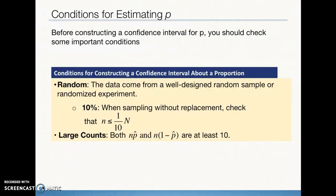Our three conditions are: Random — data must come from a well-designed random sample or randomized experiment; 10% rule — for independence, the sample size must be no more than 10% of the population; and Large Counts (normal condition) — the number of successes and failures must each be at least 10. If met, we use the four-step state-plan-do-conclude process.